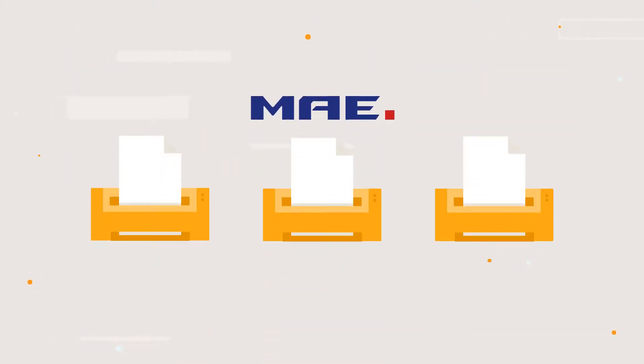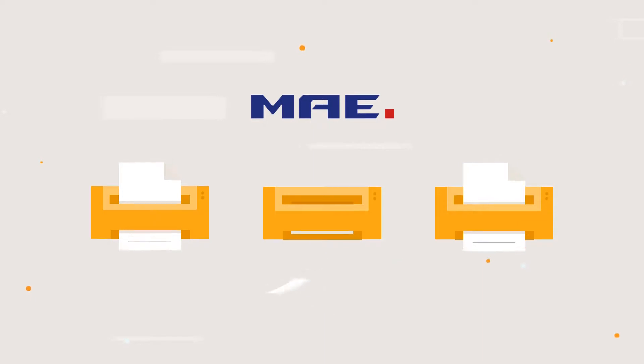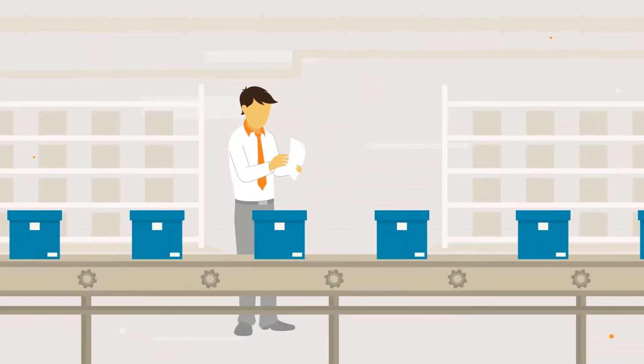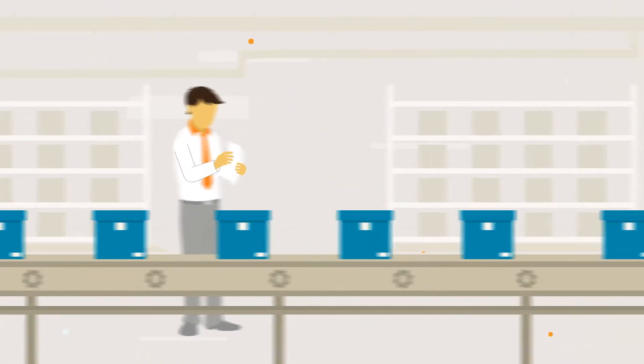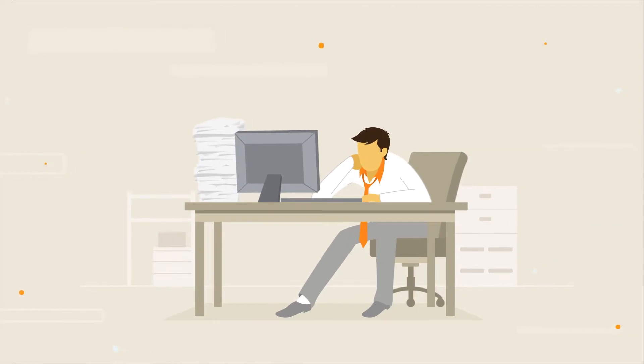For years, MAE ITEL tracked job information manually with paper travelers. Employees on the shop floor estimated how much time they spent on each job, then spent hours manually entering data about timing, costing, and other details into their computer system.